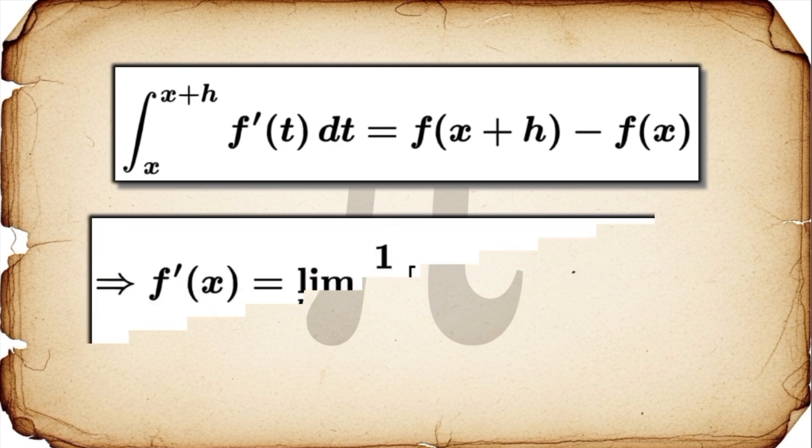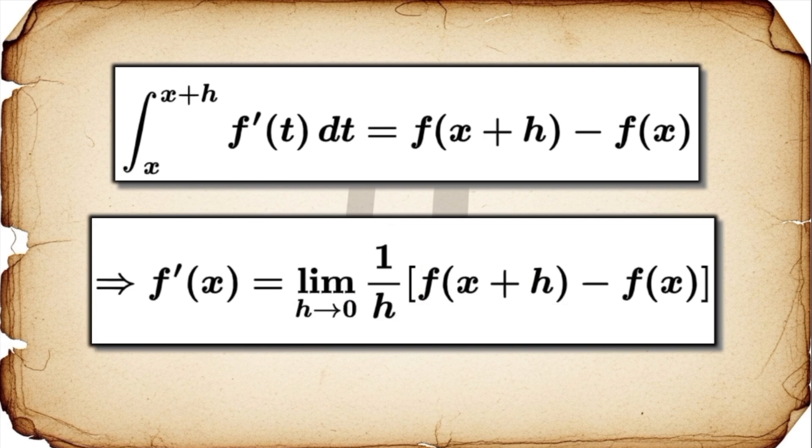When we do that, our new definition becomes the limit as h approaches 0 of 1 over h times the quantity f of x plus h minus f of x. And what do you know? That is literally the standard definition of the derivative. So the big takeaway here is they're identical. Our new definition wasn't circular at all. It was just a perfectly valid, different way of saying the exact same thing.